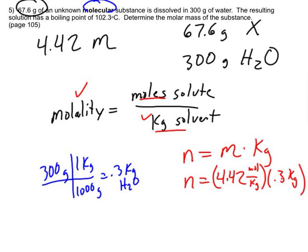So if I do that, 4.42 times 0.3, I get that I have 1.33 moles of solvent. So I now know I have 1.33 moles of solvent. And again, I'm trying to find the molar mass.